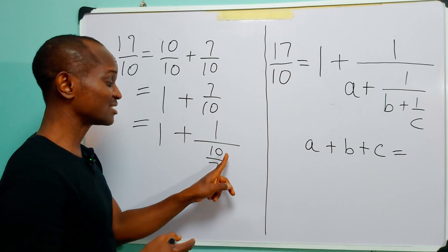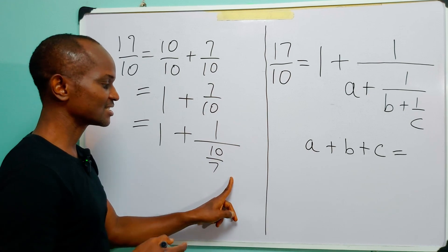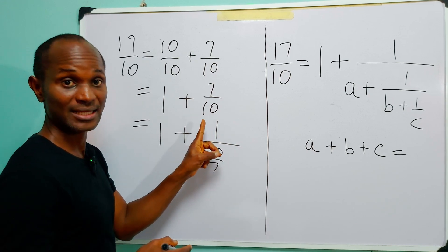And of course, the reciprocal of 10 over 7 is 7 over 10. So by writing this in this form, I have not changed anything.